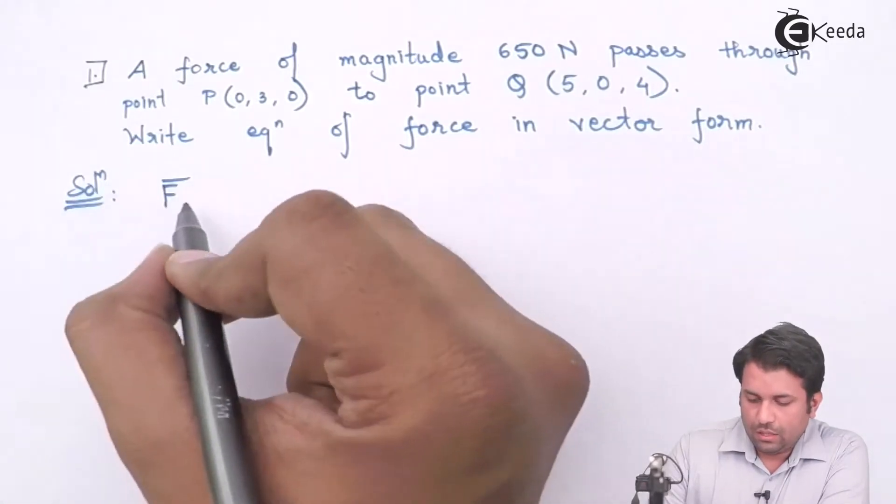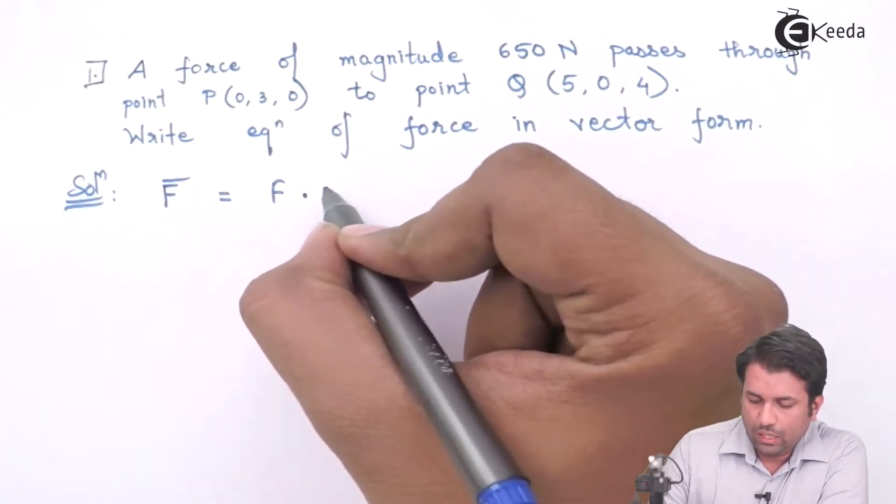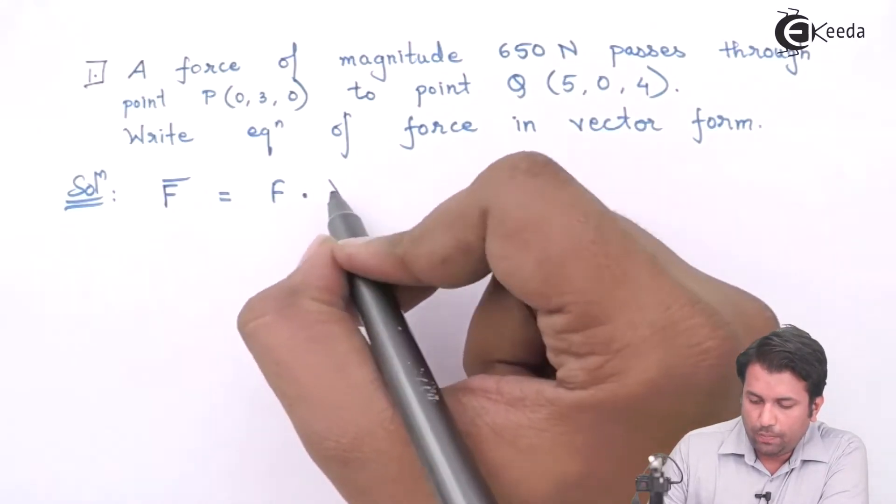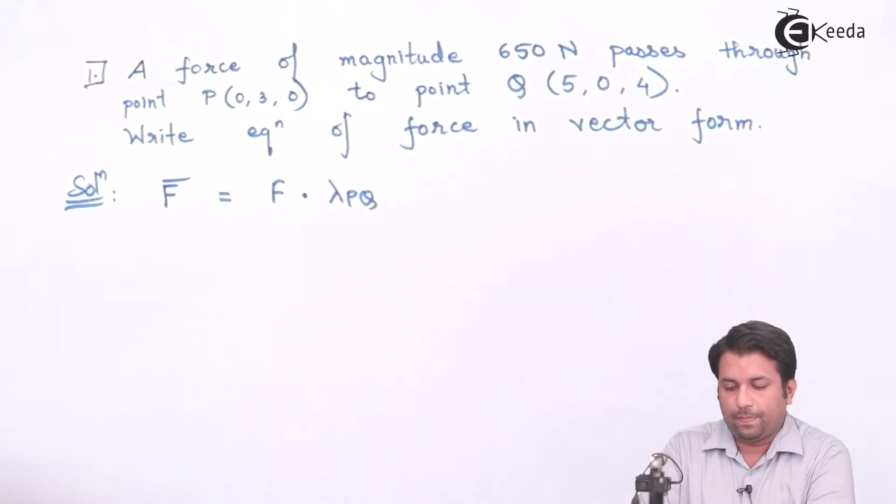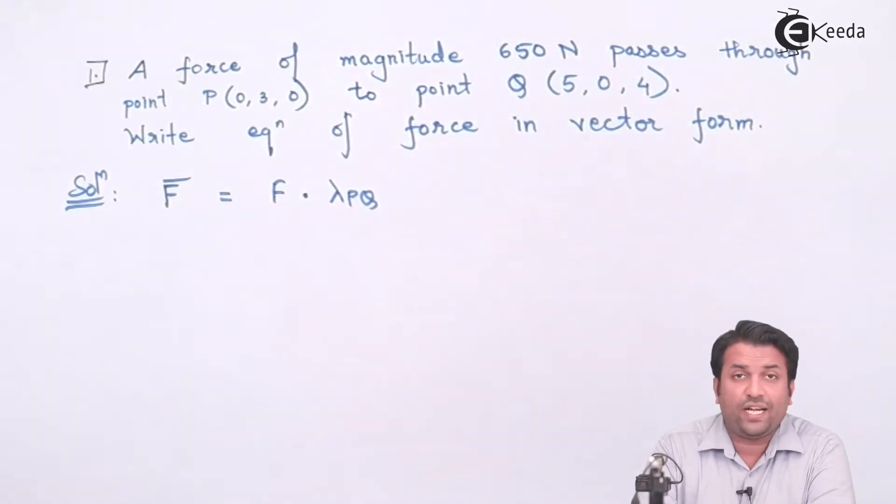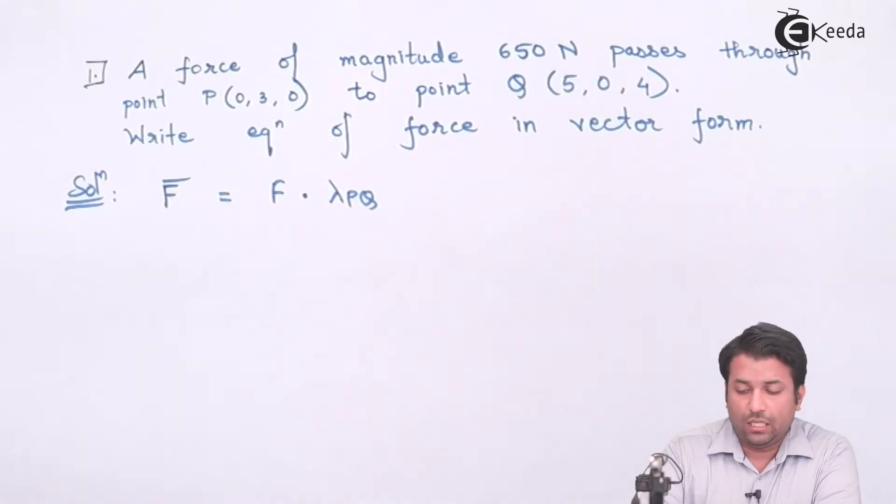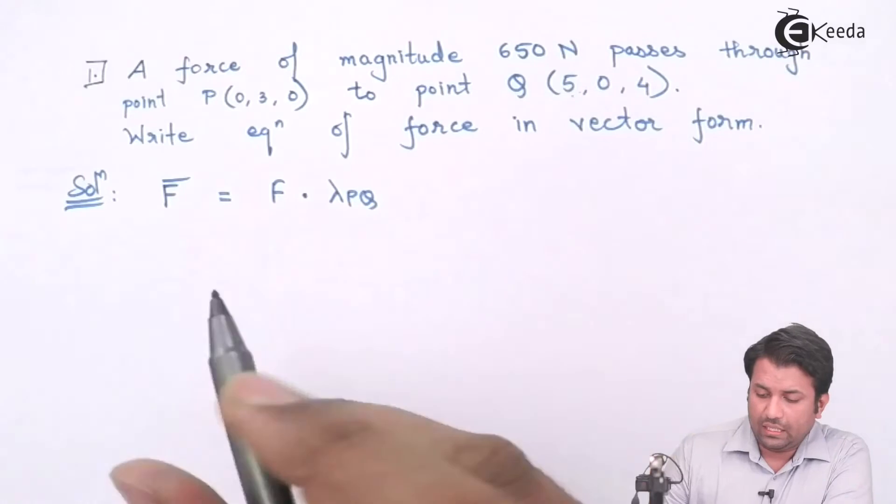The force vector is represented as the force magnitude and the dot product of the two points that I have. I know the force magnitude is 650 Newtons. I need to find out the unit vector of these two points.